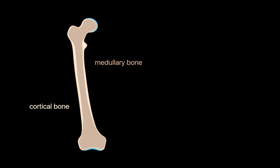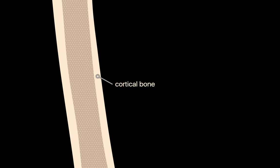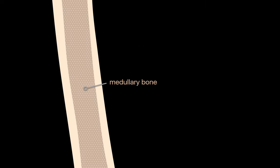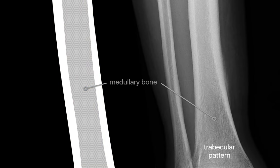Now let's look at a longitudinal cross-section through the bone and the two types of bone tissue. Cortical or compact bone is of high density, mostly responsible for bone strength, and appears homogeneously white on x-ray. Medullary bone is less dense and appears light gray on x-ray with a fine trabecular pattern. When we encounter a bone lesion, its location within cortical versus medullary bone tissue can sometimes be a helpful clue with regards to its differential diagnosis.